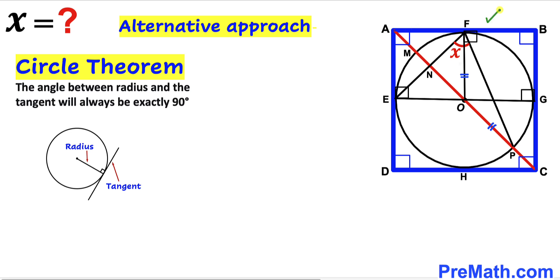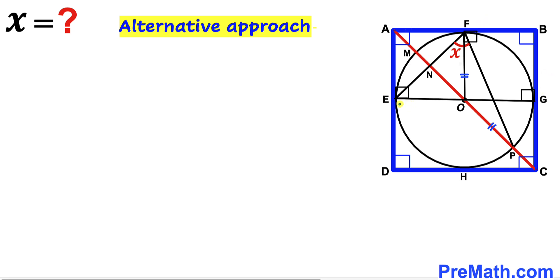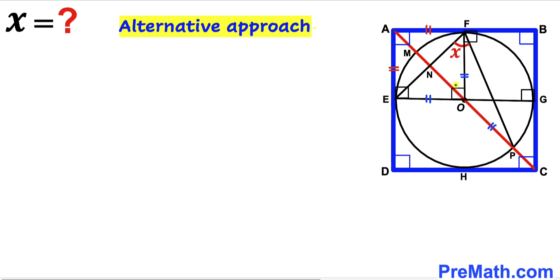All these angles are 90 degrees since they are formed by radii and tangent lines. Radius EO equals radius OF, so side AF equals EO and side EA equals OF. Since all interior angles are 90 degrees, angle EOF is also 90 degrees.